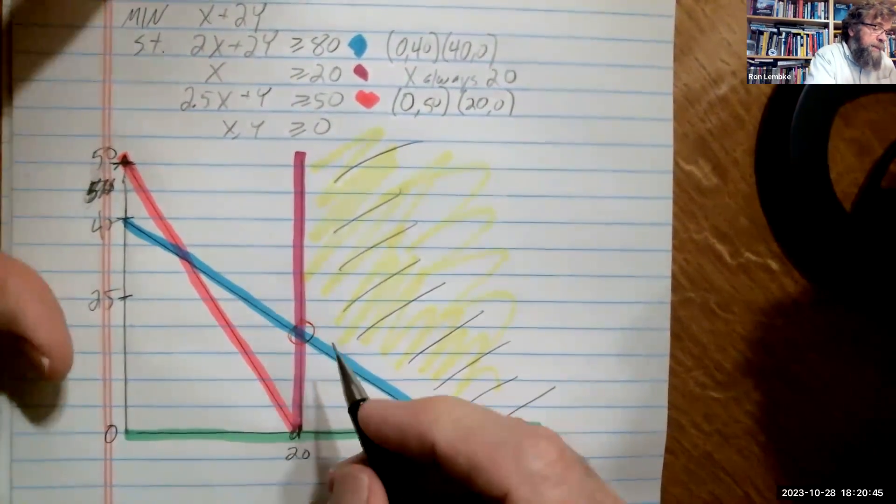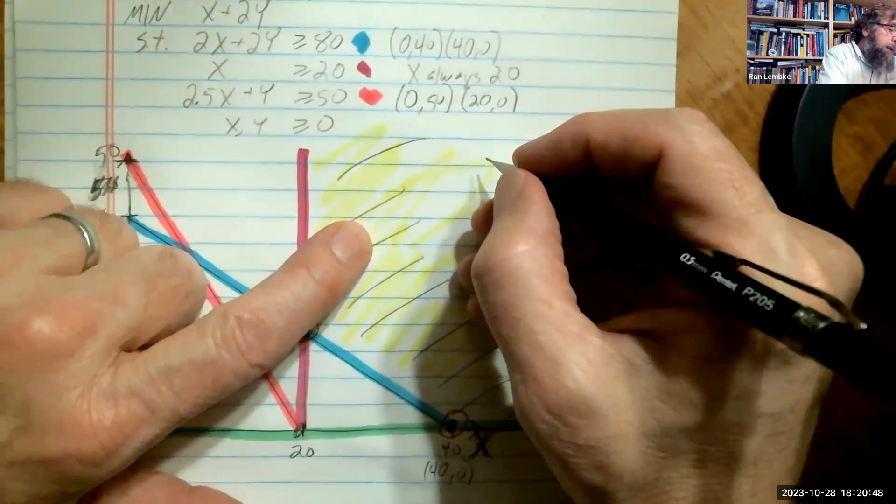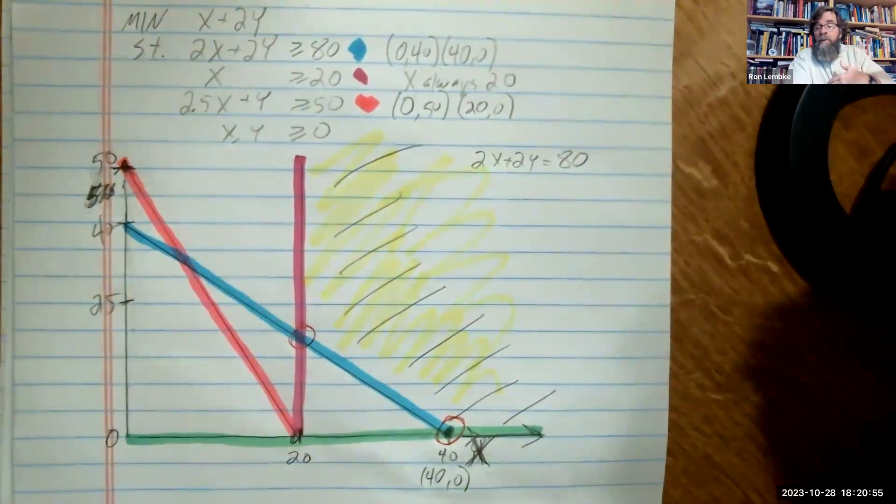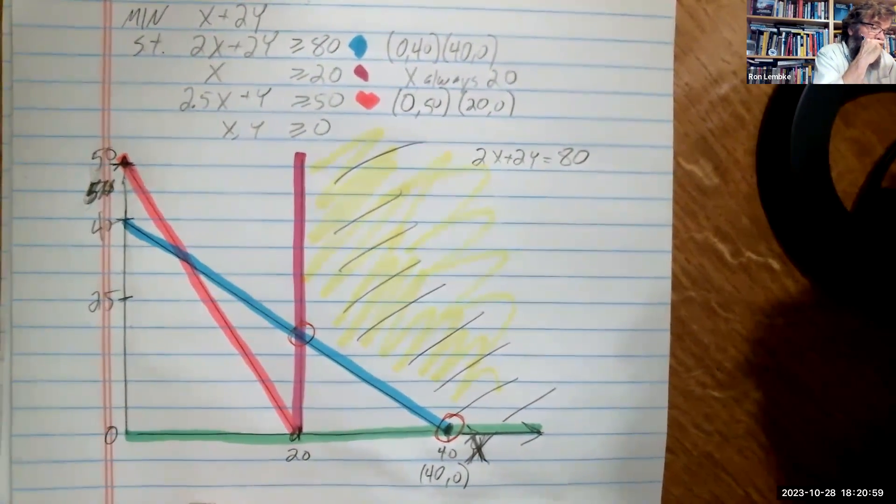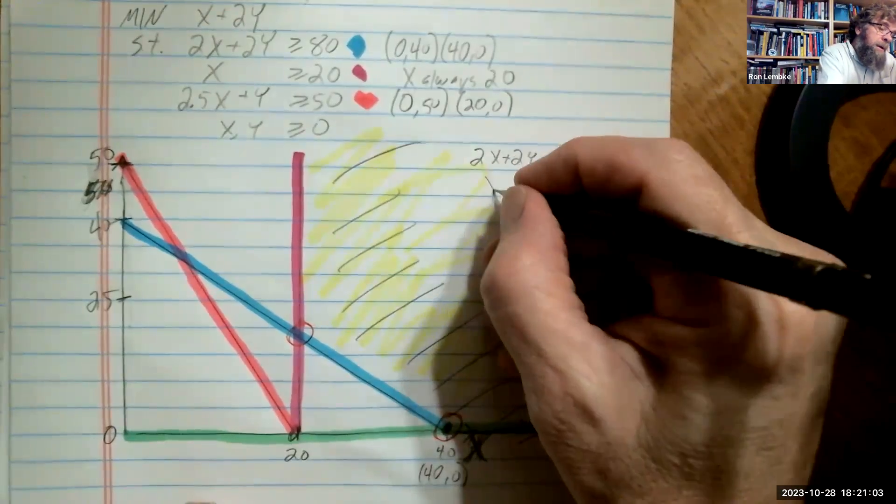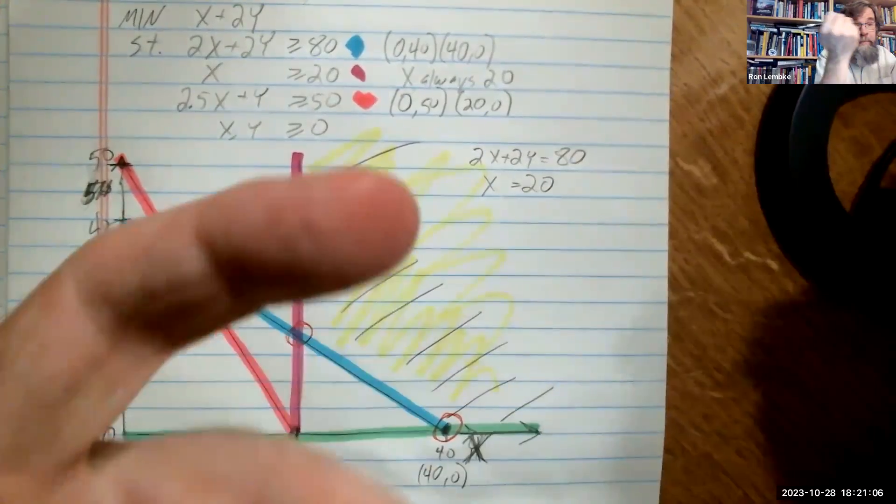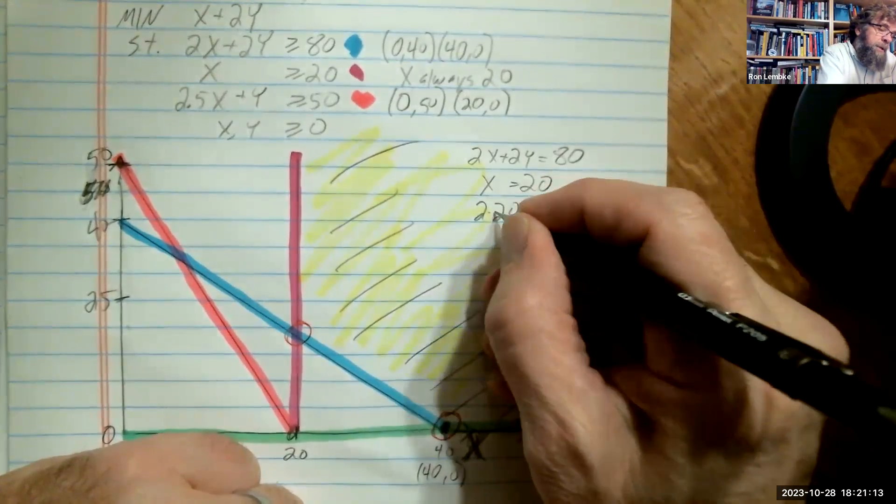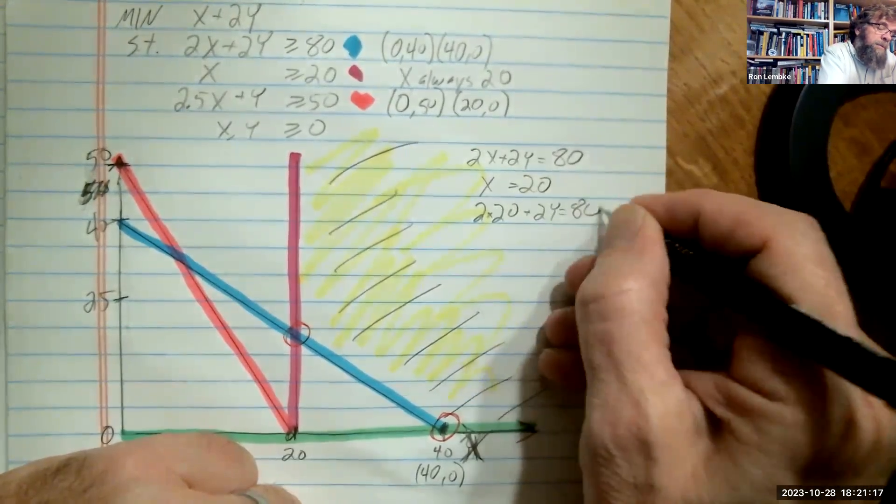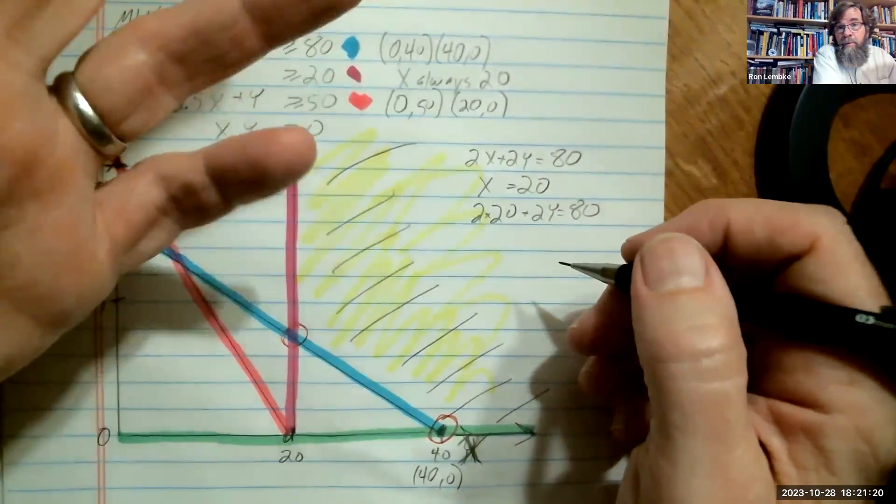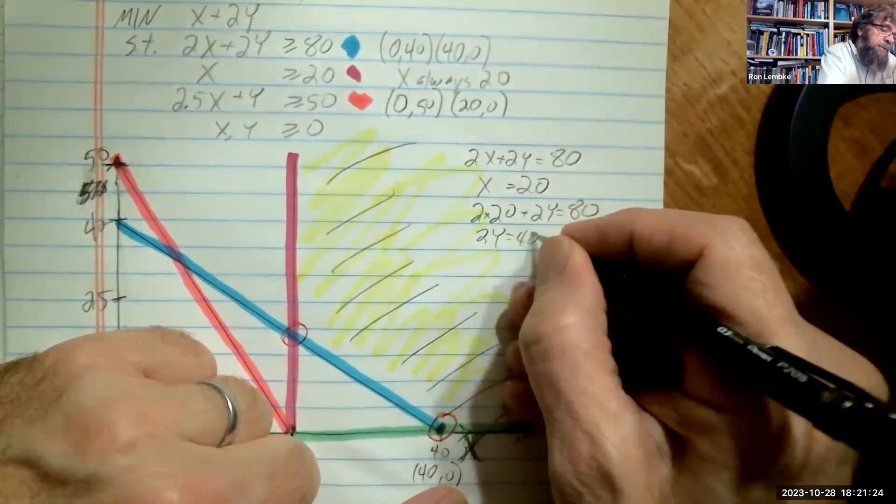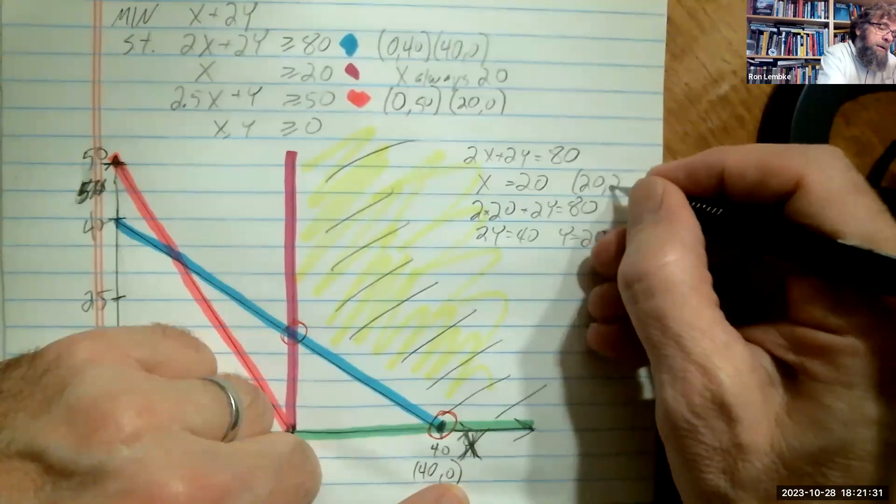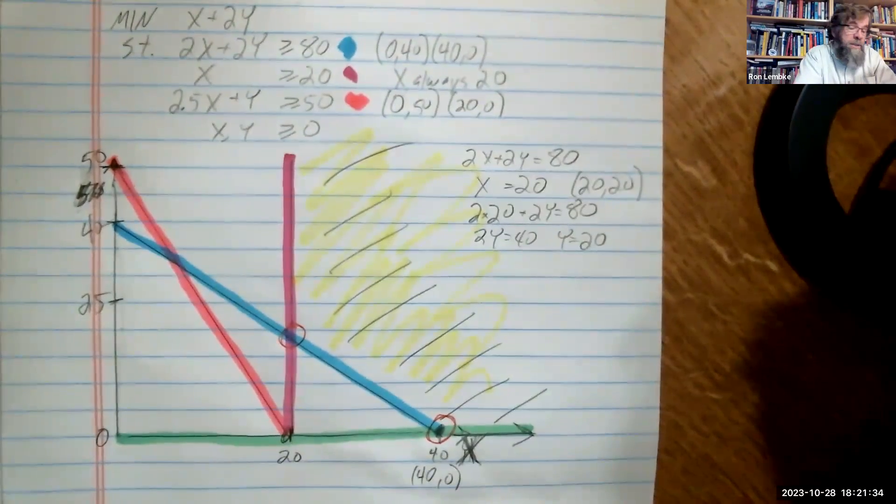And then this point right here is where the purple and the blue intersect. And the blue says 2x plus 2y equals 80, when we're on the constraint it's an equality. And the purple just says x equals 20. So this is really easy. We just stick a 20 in for x and we have 2 times 20 plus 2y equals 80. So 2 times 20 is 40, subtract 40 off both sides, and we have 2y equals 40, divide both sides by 2, and we have y equals 20. So that is the location of that point right there, 20, 20.